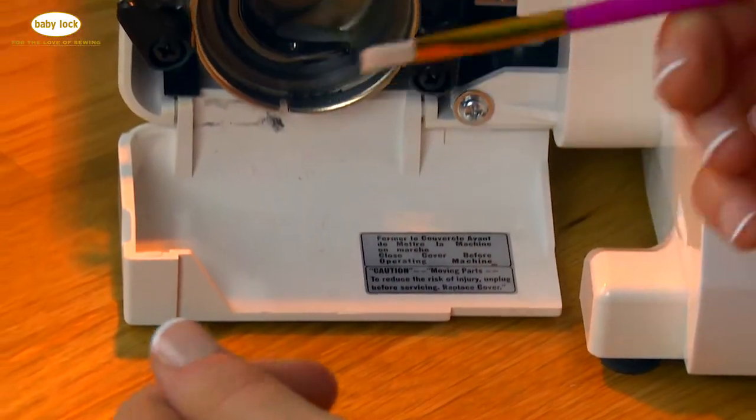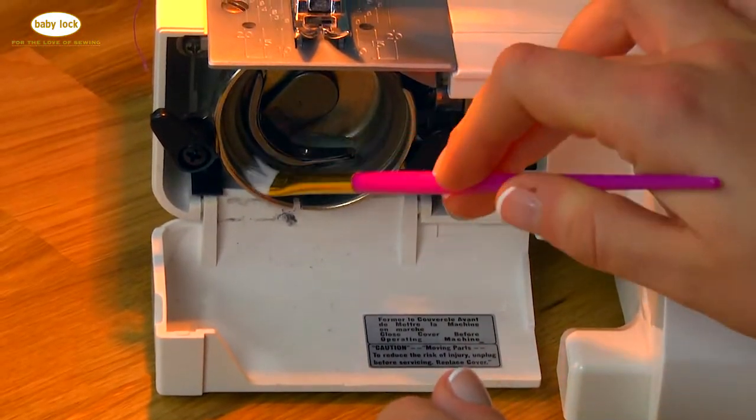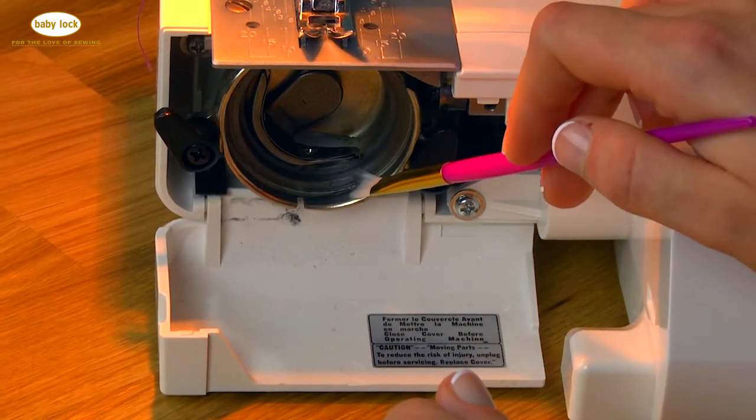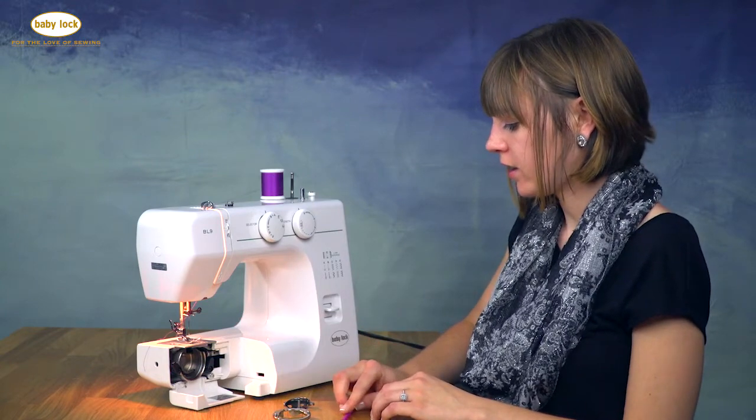What I like to do is take either a paintbrush or some little scraps of batting and just wipe it down. Make sure that there are no thread pieces caught. After that is cleaned out...